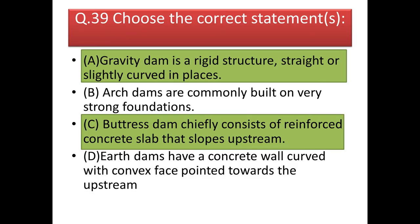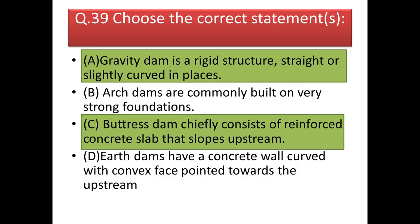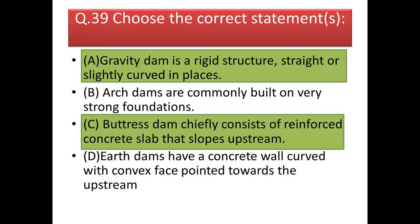Next question: choose the correct statement about dams. A gravity dam is a rigid structure, straight or slightly curved in places — correct. Arch dams are commonly built on very strong foundations — not correct, as arch dam foundations are not required to be very strong. Buttress dams simply consist of reinforced concrete slabs that slope upstream — as seen in the figure, the concrete slabs slope upstream. Earth dams have a concrete wall curved with convex face pointing upstream — there is no curvature in an earth dam. The correct answers are option A and option C.